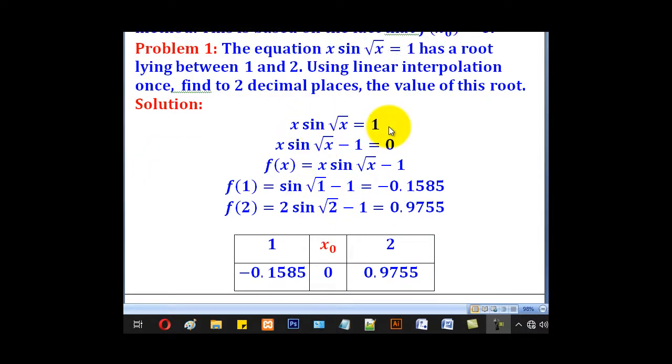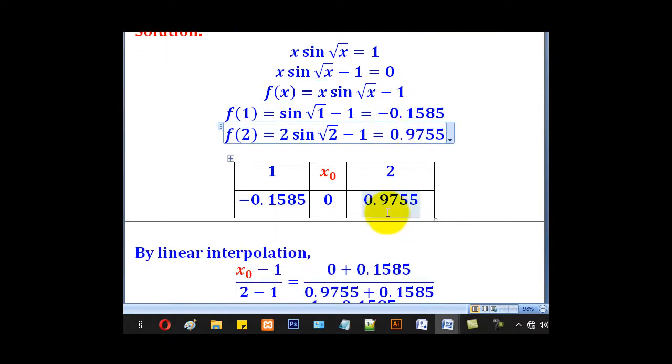In this case, first bring everything on one side and leave 0 on the other side. What is on this side becomes your f(x). We shall get f(1) and f(2). The root will be between these because of the sign change. This is negative, this is positive, implying that the root is between 1 and 2.